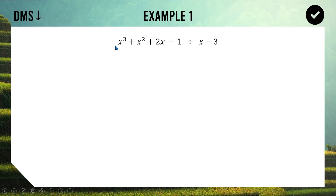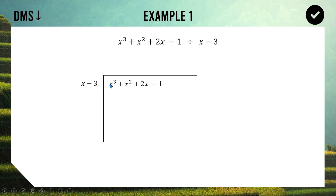Here's our first polynomial example. Our polynomial is the cubic x³ + x² + 2x − 1, and we are dividing this by x − 3. We draw up a long division brace, put x − 3 out the front, and the polynomial inside. First step is D for Divide: divide the two leading terms. x³ divided by x gives x². So we write x² up top. Next step is M for Multiply: x² multiplies everything out the front — x² times x is x³, and x² times −3 is −3x².